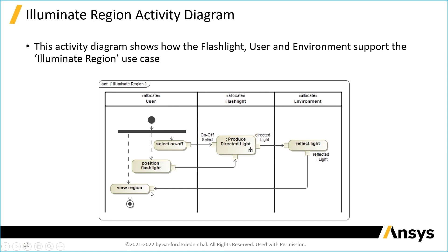You can see the functions the user performs, and you can see that the flashlight's function is to produce directed light. Of course you're not going to illuminate a region unless the environment does something — basically it has to reflect light. So we're assuming the environment reflects light in order to accomplish this use case.